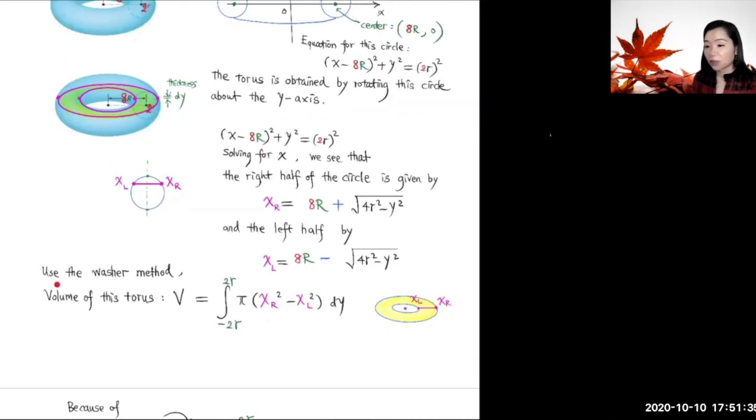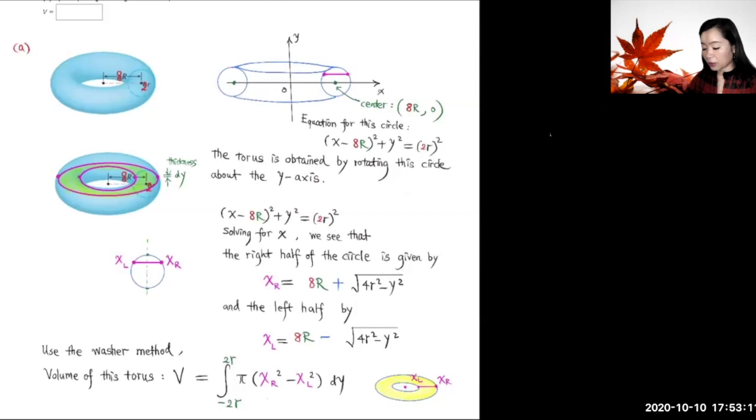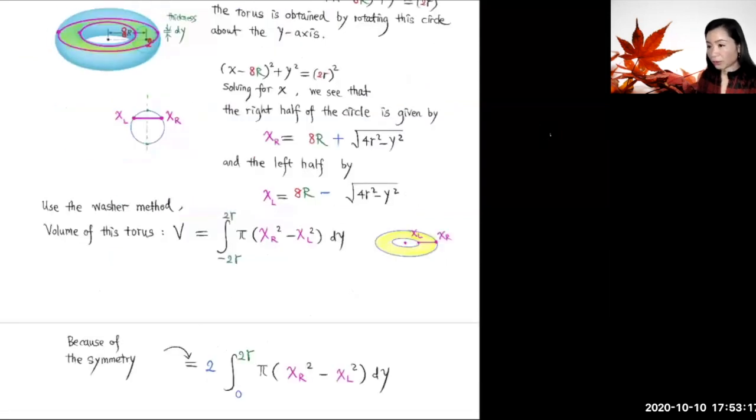Now we can use the washer method to find the volume for this torus. So we integrate this cross section here as washer. It's π times the outer radius squared subtract the inner radius squared. The outer radius corresponds to x_R, inner radius corresponds to x_L. The thickness of each washer is Δy, or dy. Y goes from -2r to 2r.